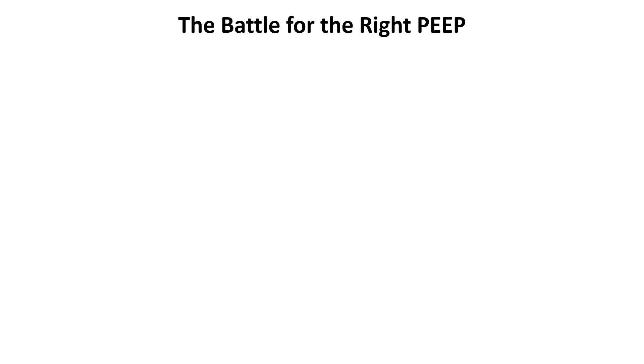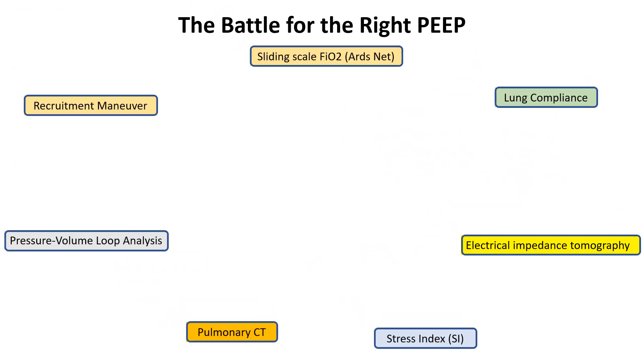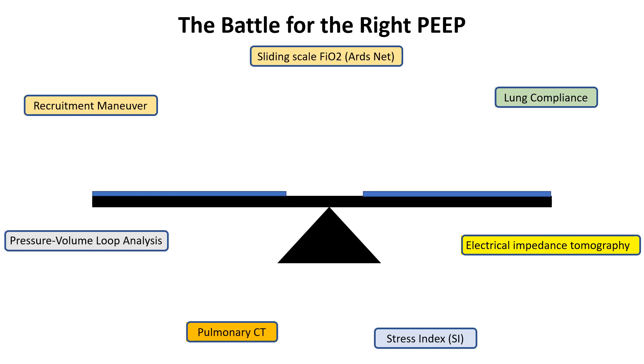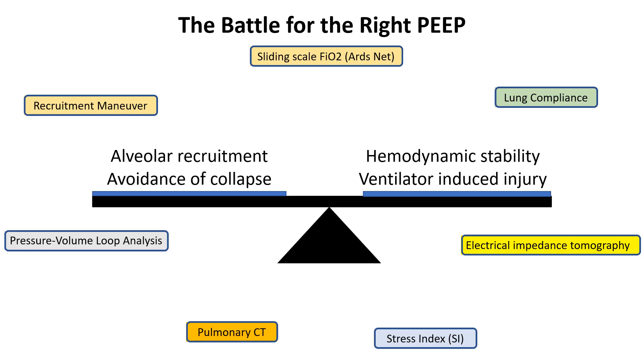Now that we have explored both the benefits and drawbacks of PEEP, the key question is: how much PEEP is ideal? There is no universally agreed-upon method for determining the optimal PEEP level. Various approaches, including oxygenation-based strategies, compliance-guided methods, and pressure-volume curve analysis, have been proposed. However, the ideal PEEP setting remains patient-specific, requiring a balance between lung recruitment, avoidance of overdistension, and hemodynamic stability.